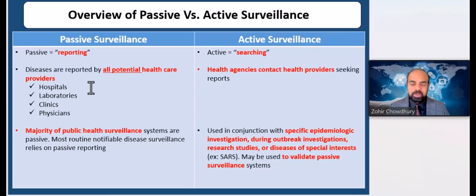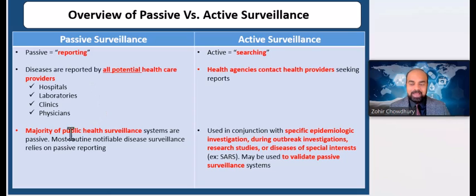The surveillance coordinator may provide training to health workers on how to complete surveillance forms and may even send someone to periodically collect forms from health facilities, but little attention is given to individual health workers who report that information. Passive surveillance is the status quo of public health surveillance, and the majority of public health surveillance systems are passive. Most routine notifiable disease surveillance relies on passive reporting.